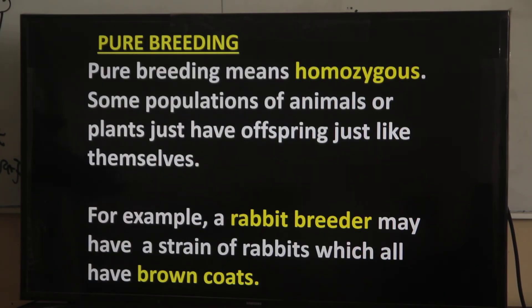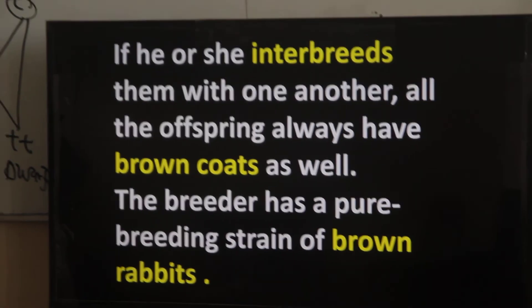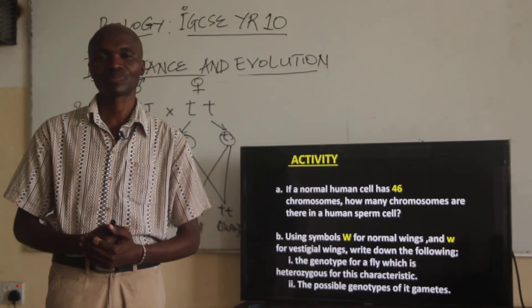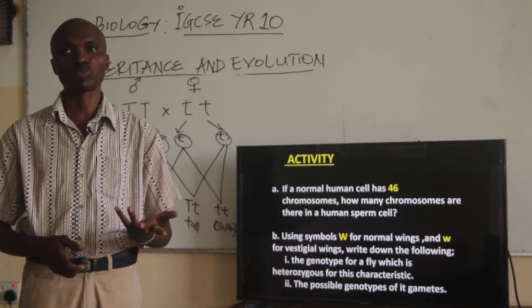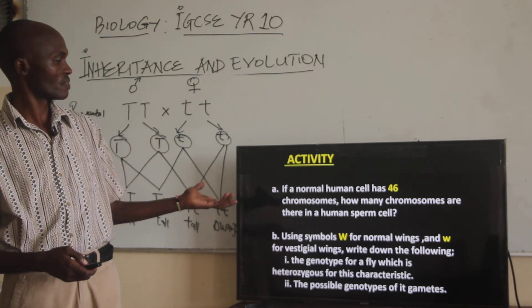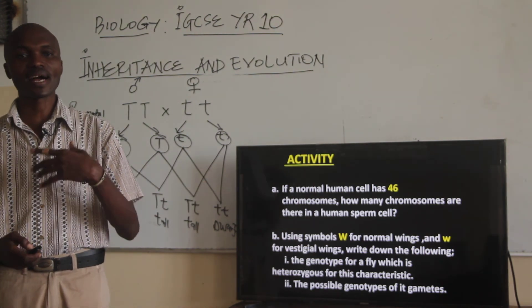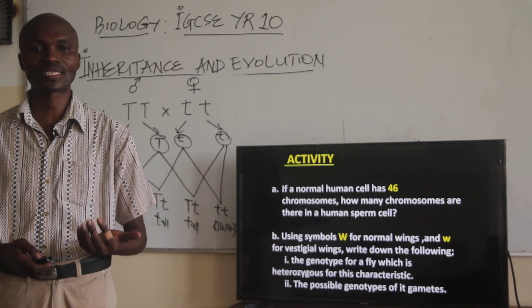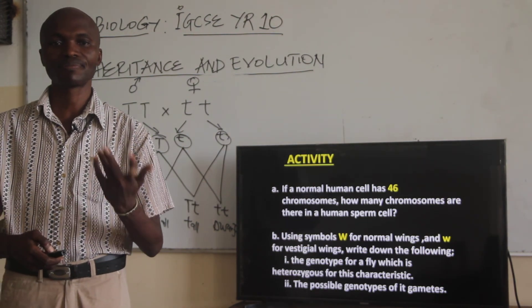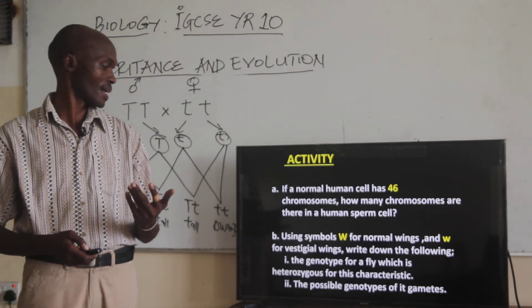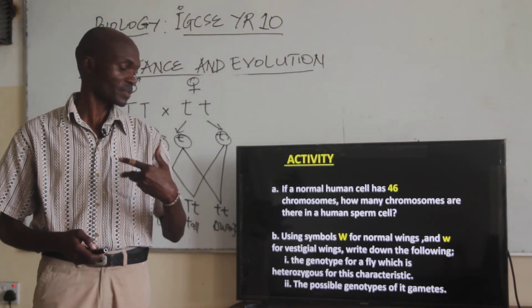That brings us now to the end of our session. I'll leave you with some questions — the activity to be undertaken. First question is: if a normal cell has 46 chromosomes, how many chromosomes are present in that?